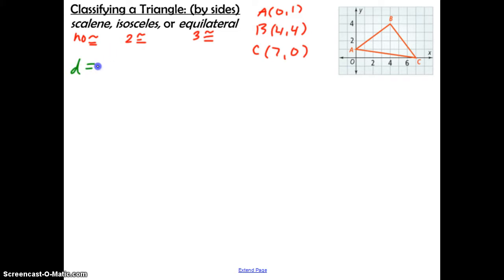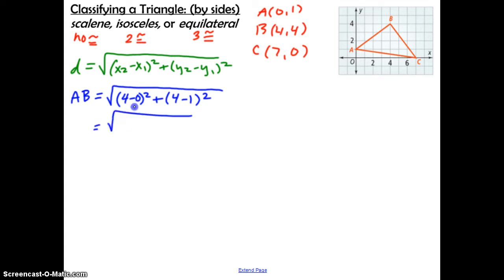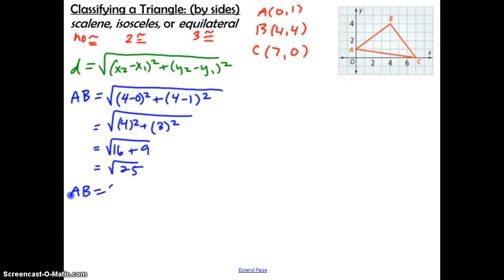If you don't remember the distance formula, it's the square root of (x2 minus x1) squared plus (y2 minus y1) squared. Let's find the first side together. For AB, we use these coordinates: the square root of (4 minus 0) squared plus (4 minus 1) squared. Simplifying: 4 minus 0 is 4, 4 minus 1 is 3, giving us 16 plus 9, which is 25. The square root of 25 equals 5. So the length of AB is 5.